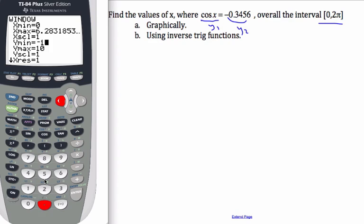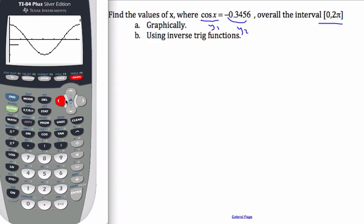And now I'll get myself a nice window to look at. I'll graph it. There's the cosine. There's the negative 3.456. And now I want to find these points of intersection.